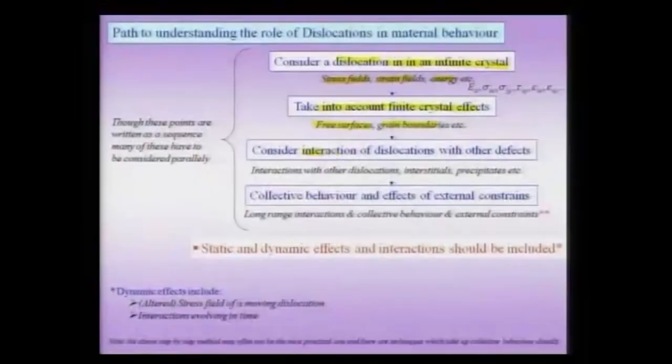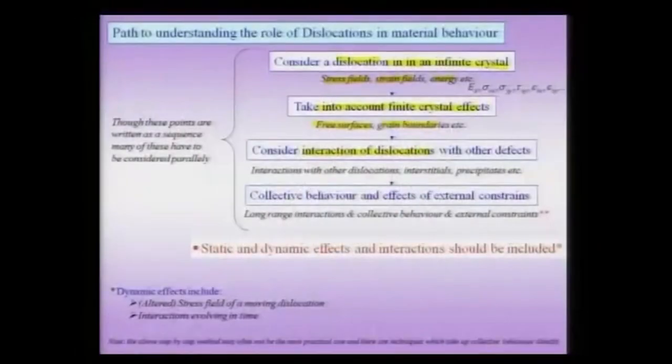After considering finite crystal effects, we need to consider the interaction of dislocations. We will consider a few examples of interactions between dislocations. This interaction is not only between dislocations themselves, but also between dislocations and other kinds of defects in the material — such as vacancies, grain boundaries, twins, or any other kind of defect. So we need to understand the interaction of dislocations with other defects in the material.